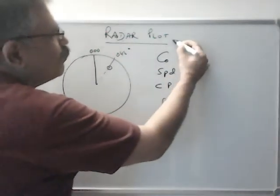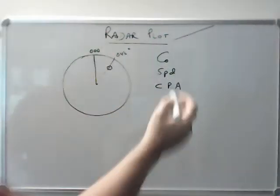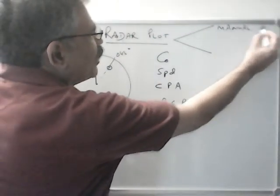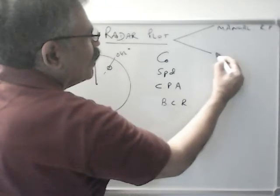So radar plotting, there are two methods which we will discuss one by one. One is manual, manual radar plot, and one is automatic.